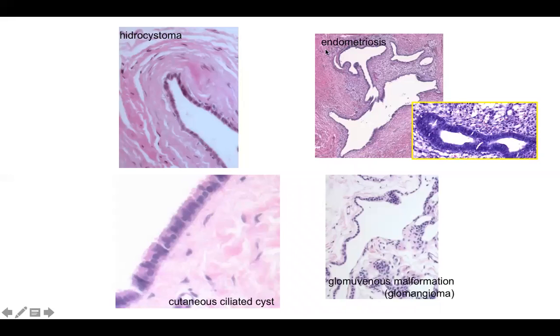Endometriosis has characteristic fibroblastic stroma with red blood cells. The cells lining the space are often rectangular and some may be clear.